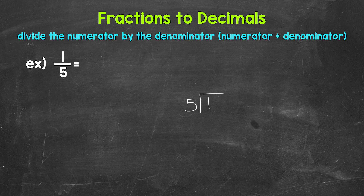Now we can work through the division process. We have 1 divided by 5. How many whole groups of 5 in 1? How many fives in 1? Well, we can't do that. So we need a decimal and a 0 in order to work through this problem. Once we have the decimal and the 0, we can bring the decimal straight up into where the quotient — the answer — will be. And now we can think of this as 10 divided by 5.